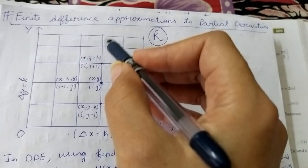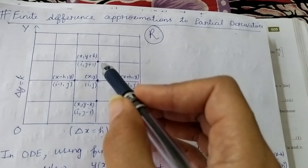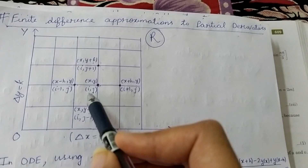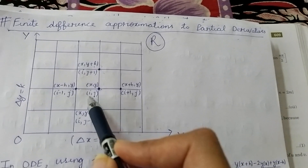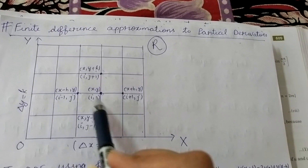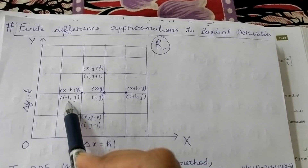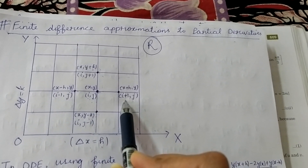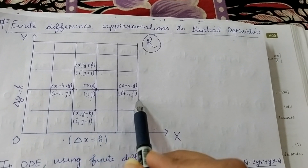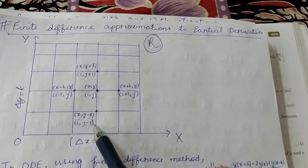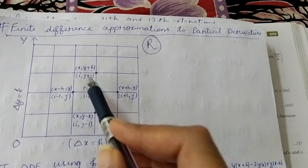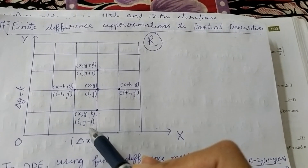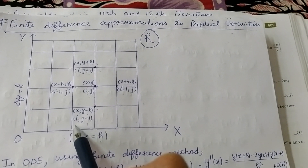On a line parallel to the y-axis, x remains the same. If I assign index numbers — let this point be (i, j), where i denotes x and j denotes y — then moving left gives i minus 1, moving right gives i plus 1, and j remains the same. Moving upward adds 1 to j, and moving downward subtracts 1 from j, while i remains unchanged. So this is the rectangular mesh with named mesh points.